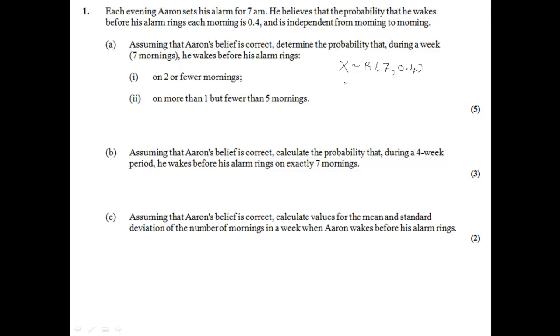We're looking for the probability that he wakes before his alarm on two or fewer mornings. In other words, X is less than or equal to two, not one or two mornings. So write down what we're looking for, the probability that X is less than or equal to two. To find this we can use the tables in the formula booklet or we can use the calculator.